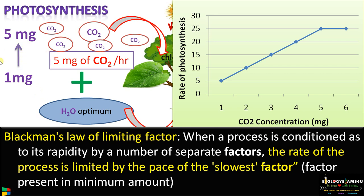If we increase the concentration of carbon dioxide, which is the factor present in the minimum amount, then the rate of photosynthesis increases — in other words, the rate of the process is limited by the pace of the slowest factor.